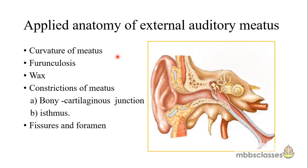Now let's cover the applied anatomy of the external auditory meatus. Regarding the curvature: since the canal is S-shaped, with the cartilaginous part directed upward, inward, and backward and the bony part directed inward, forward, and inferiorly, the tympanic membrane is in a somewhat protected state — any trauma or injury is mitigated by the curvature of the meatus.